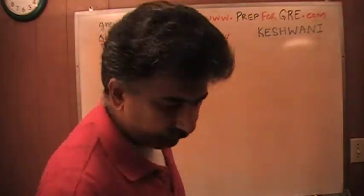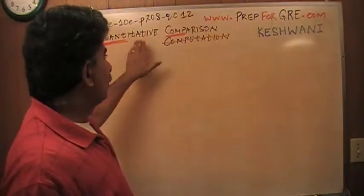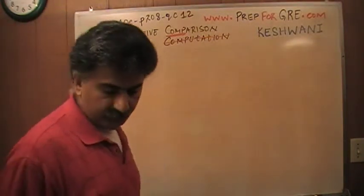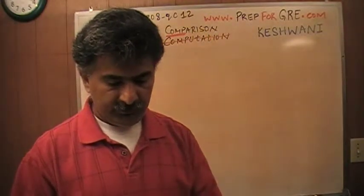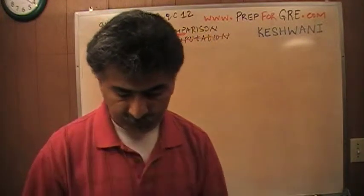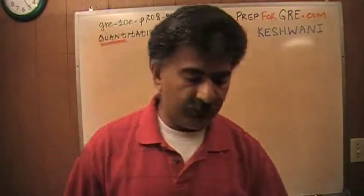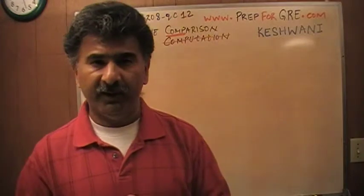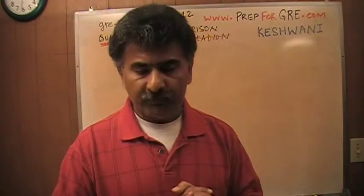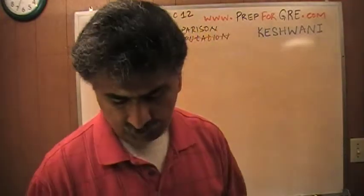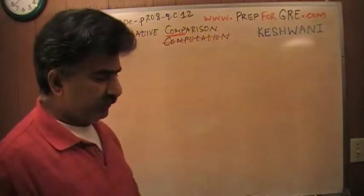The problem that I'm about to solve is on page 208, quantitative comparison question number 12. There are 15 questions in the set and this is number 12, one of the last five difficult ones. Only about half the people who took this exam got this question correctly. About 49% got it right, 51% got it wrong.